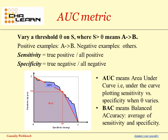This slide reminds you of how the AUC metric is computed. We vary a threshold theta on the score S provided by the participants, where S over theta means A causes B. Positive examples are of the class A causes B, and negative examples are from any of the other classes. We define sensitivity as the fraction of true positives over all positives, and specificity as the fraction of true negatives over all negatives. The area under the ROC curve is the area under the curve plotting sensitivity versus specificity as theta varies. The balanced accuracy is the average between sensitivity and specificity.